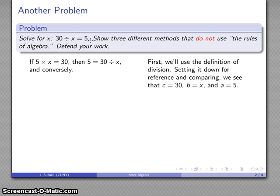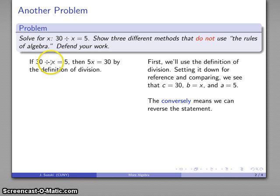If 5 times x equals 30, then 5 equals 30 divided by x. The conversely says I can go in the other direction: I have 30 divided by x equals 5, so I know that 5x equals 30 by the definition of division.